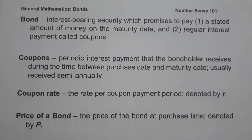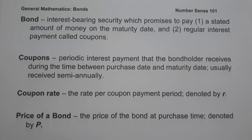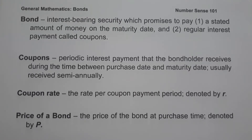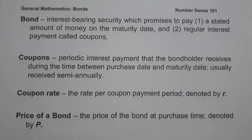For today's video we are going to talk about what bonds are and explain everything in detail. When we say bond, it is an interest-bearing security which promises to pay: number one, a stated amount of money on the maturity date; and number two, regular interest payments called coupons. Basically, a bond is a form of debt financing or raising money by borrowing from investors. Investors are guaranteed interest payments and a return of their money at the maturity date. Coupons are the periodic interest payments that the bondholder receives during the time between the purchase date and maturity date, and are usually received semi-annually.